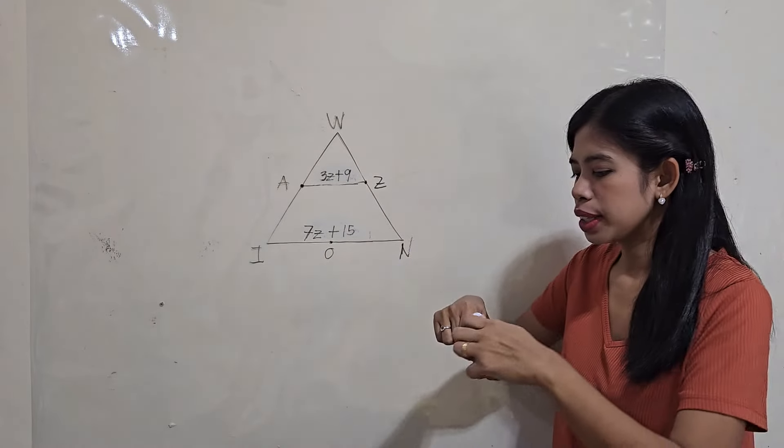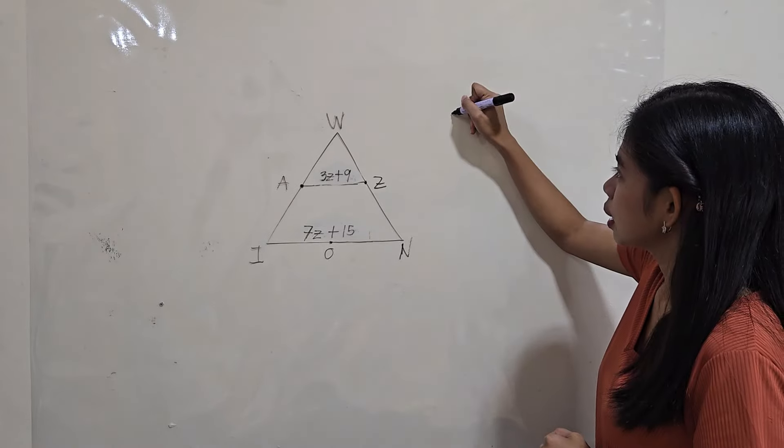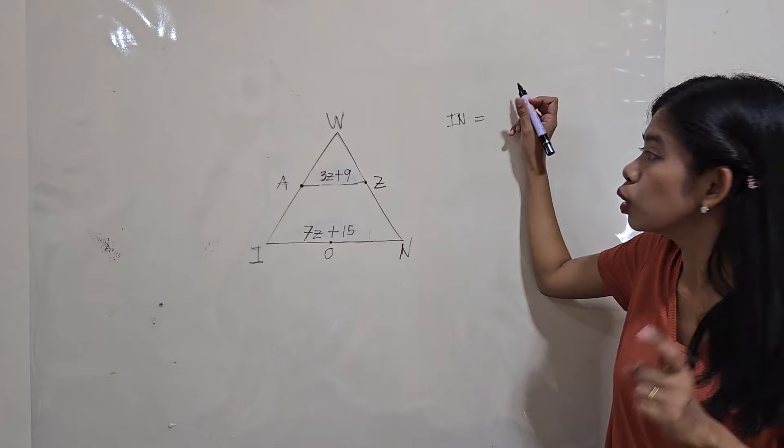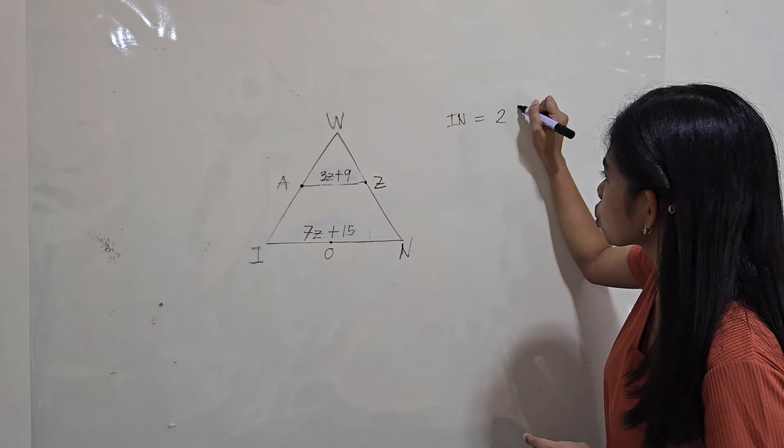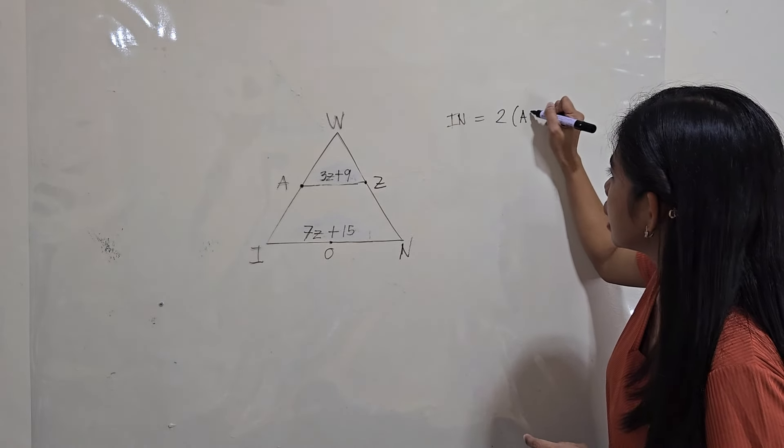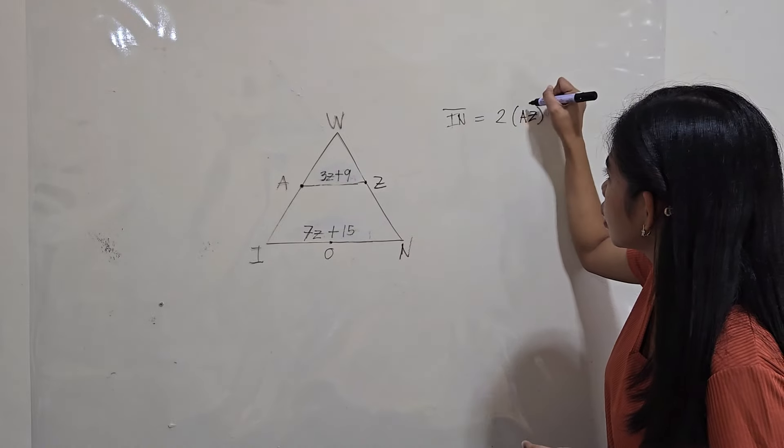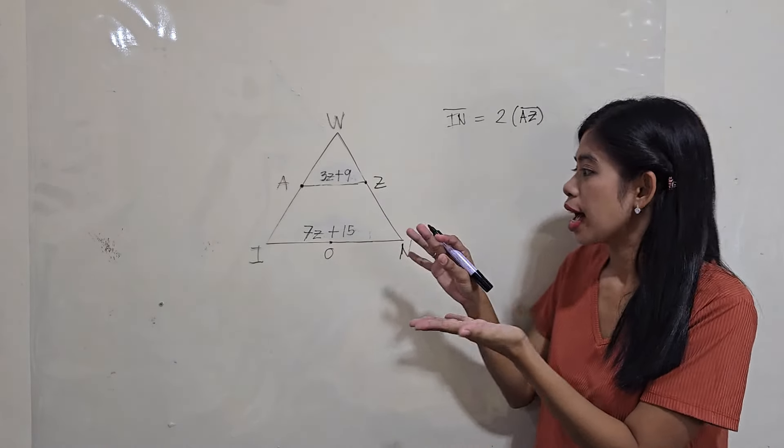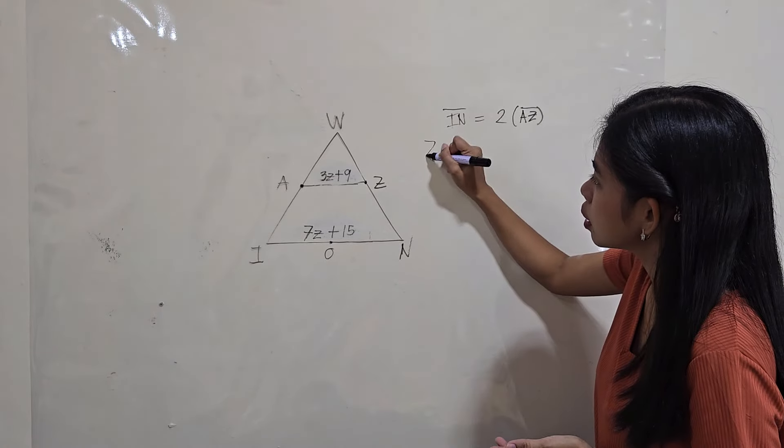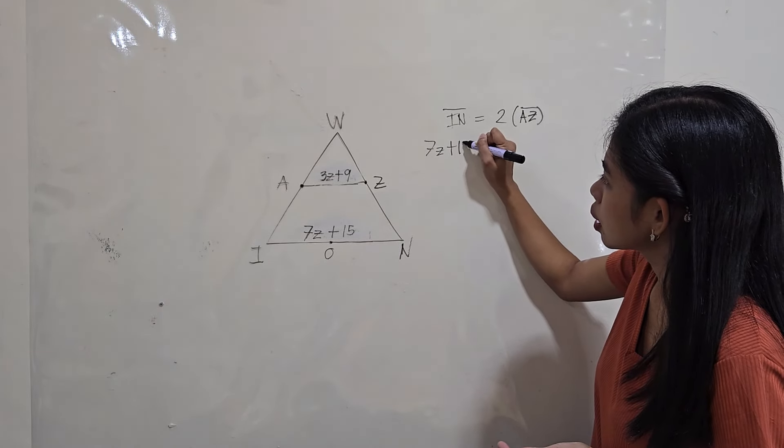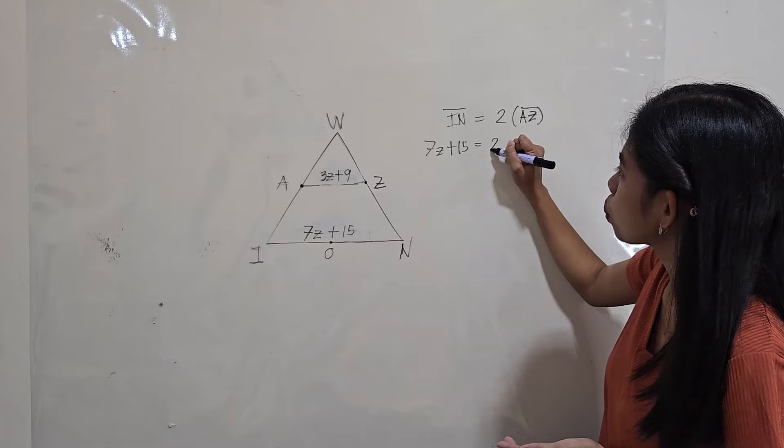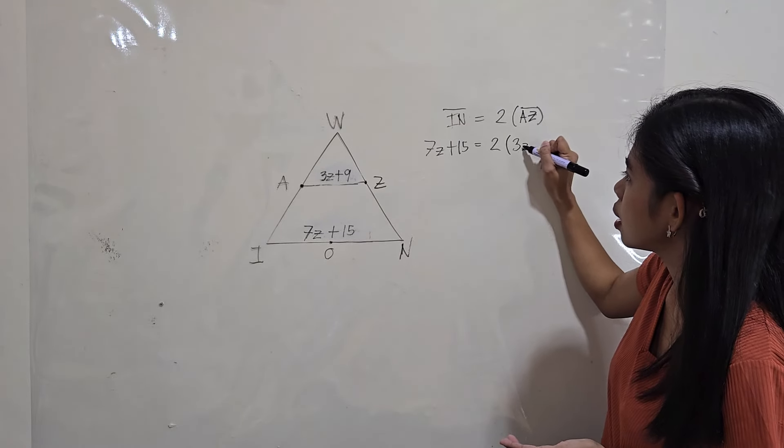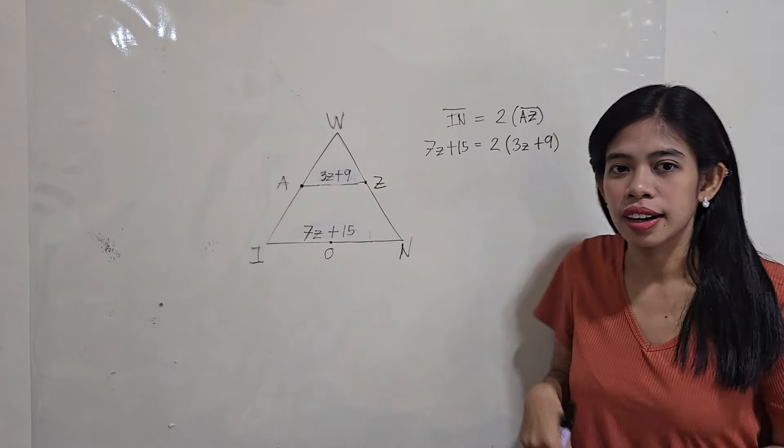So, how do we do it? You can say that the third side, IN, is equal to twice the measure of the midline AZ. So, if the measure of the third side is 7z + 15, that is equal to twice the measure of midline AZ, which is 3z + 9.